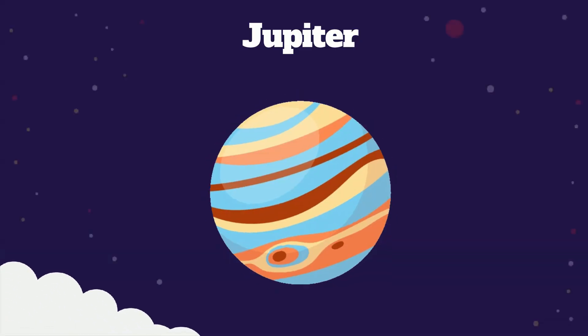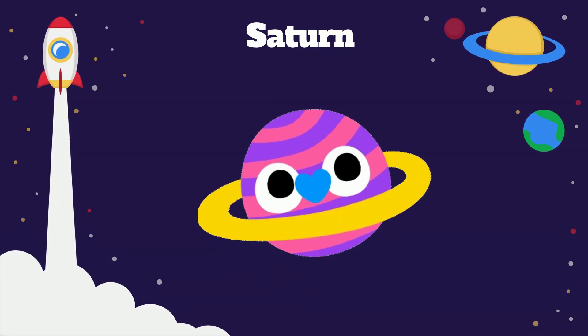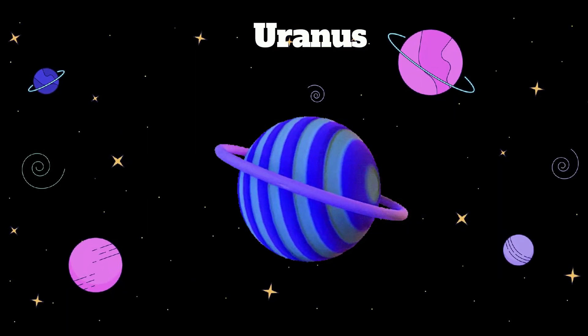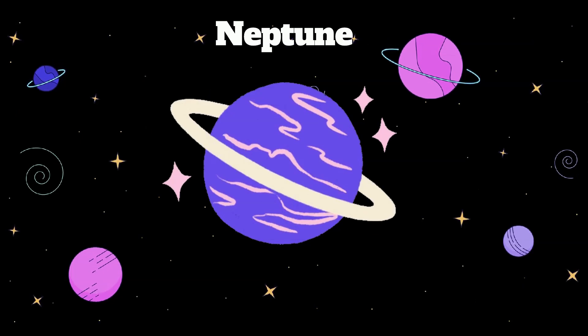Jupiter is thick and bright, Saturn's rings are such a sight. Uranus tilts with great delight, Neptune's blue and feels